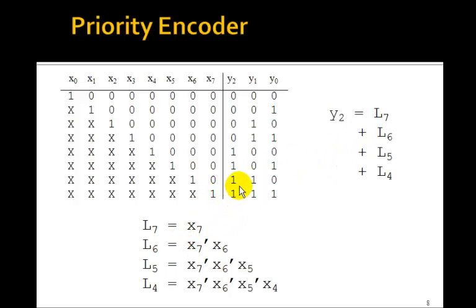But now L6 is 1. Well, it's 1 if x6 is 1 and if x7 is 0. This must be 0 now. So we say not x7 and x6. Similarly, L5 is 1. x5 has to be 1 and x6 and x7, 0. So this is not x7 and not x6 and x5. And L4 is not x7 and not x6 and not x5 and x4.